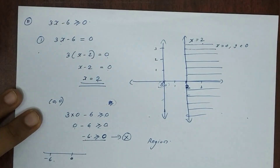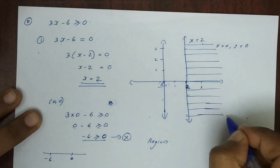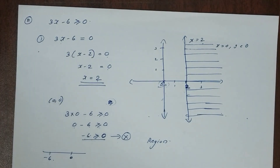So the solution to this inequality lies in that region, which is the shaded portion on the correct side of the line.